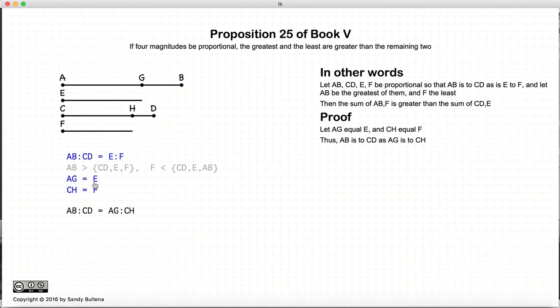Now since AG is equal to E and CH is equal to F, and we have the ratio of AB to CD is equal to the ratio of E to F, if we just substitute AG and CH for E and F, we have this ratio: AB to CD is equal to the ratio of AG to CH.